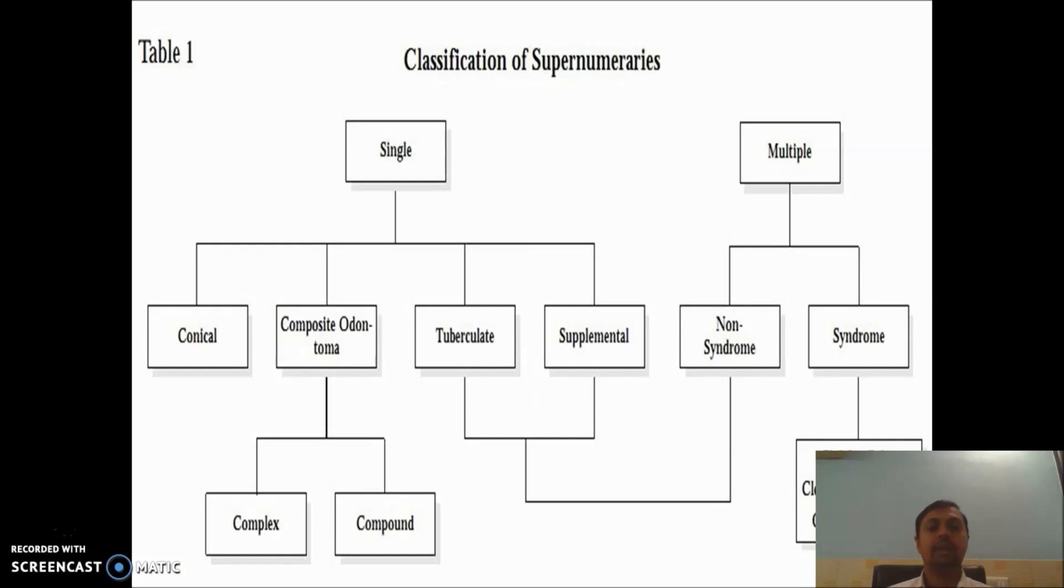Little bit detail on supernumerary teeth. Remember, if the supernumerary teeth are multiple, they are associated with syndromes like cleft lip, cleft palate, or cleidocranial dysplasia, or Gardner syndrome. These supernumerary teeth are of different shapes. Based on shape, they are classified as conical, composite, odontoma, tuberculate, or supplemental.